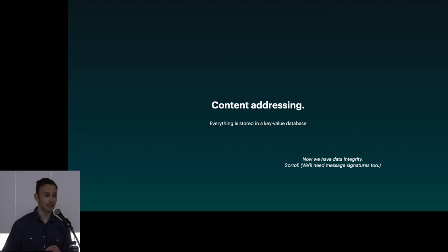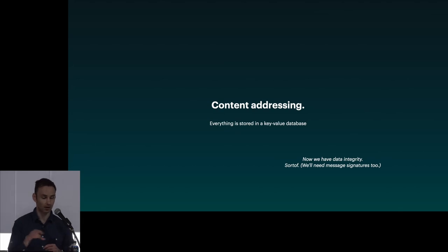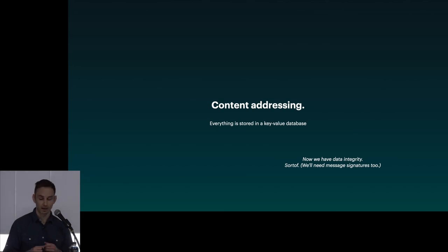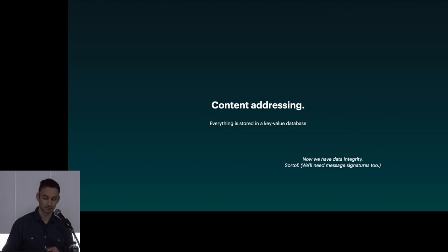This gives us a property called data integrity. If the data is messed with — if a cosmic ray from outer space hits a hard drive bit and flips something — we're going to know, because the hashes won't match. If the sysadmin tries to do something funny, we're going to know. So this gives us data integrity, especially when we add signatures later.